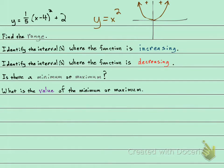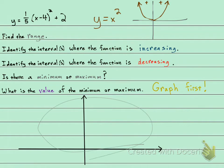They're asking us a bunch of questions here. Find the range. Where is it increasing? Where is it decreasing? Is there a minimum or maximum? And what is the value of that minimum or maximum? What we need to do is we need to graph it first. So graphing it first is going to allow us to answer all of those questions. So let me put a little graph down here. And I left a little room up here towards the top because I know what the graph is going to look like.